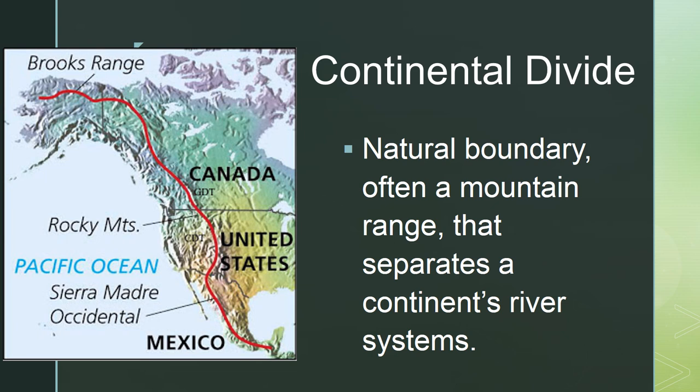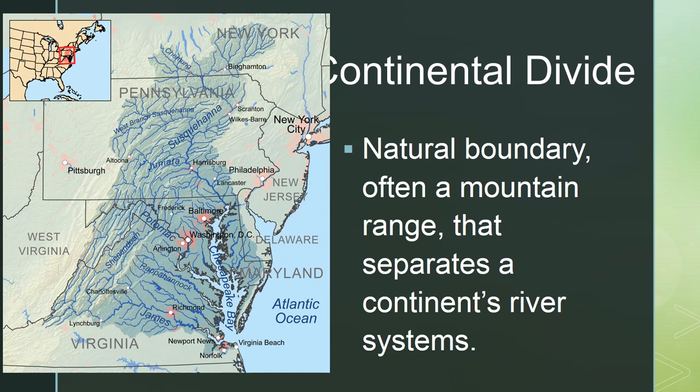A continental divide is a natural boundary, often a mountain range, that separates a continent's river systems. Each river system flows into a certain basin, bay, or sea.